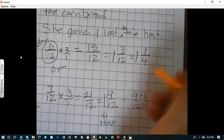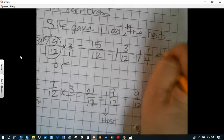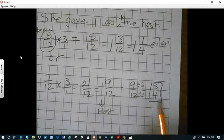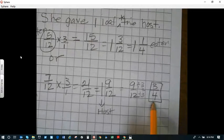This is the eaten part. We are looking for the uneaten, and so one loaf goes to the host, and then she takes three-fourths home.